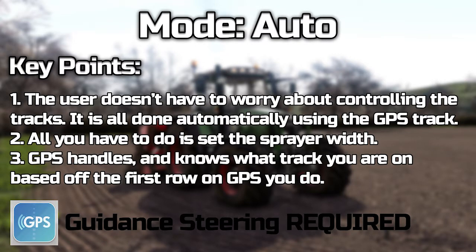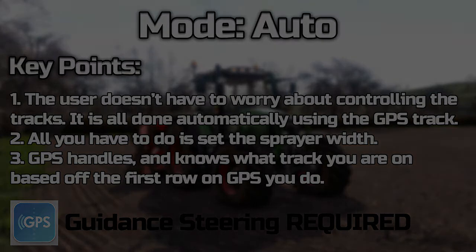For the auto mode you require the guidance steering mod, another mod made by Wopster — it's a great mod and we're going to make tutorials on that at some other point. If you know how to use GPS, use the auto mode; if you don't, don't worry about this part. All you have to do is set the sprayer width and, once you've got your GPS set up with the track, it will automatically know what track number you're on — which means if you want to do skip rows, it will work perfectly fine.